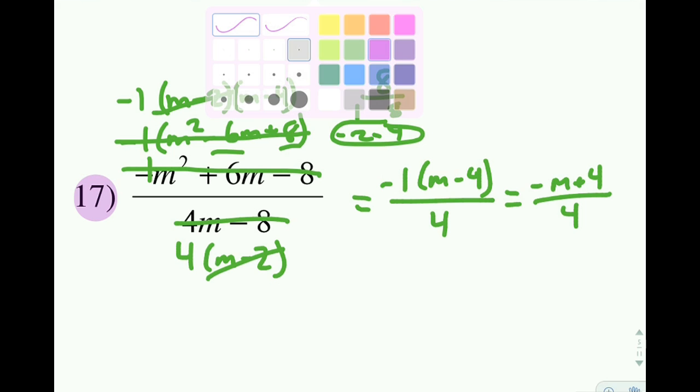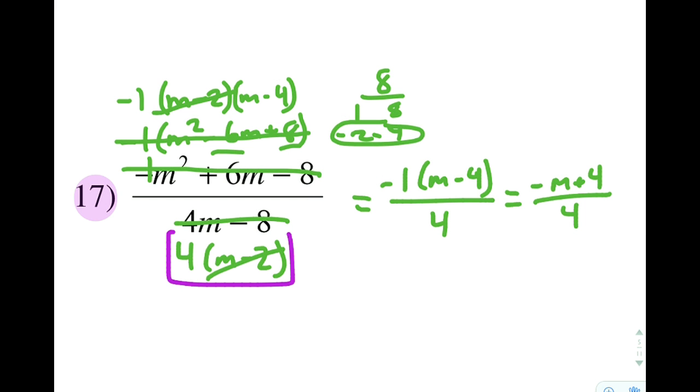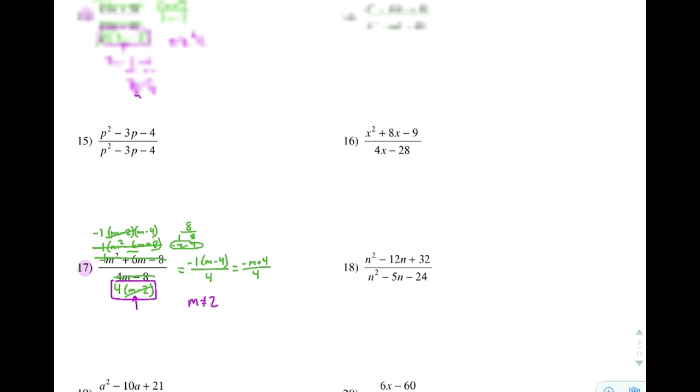Going back to our excluded values, we look at the original factored denominator. Even though in the final one there are no excluded values, in this original one here, we could plug in a 2 for m and cause that to go to 0. So our excluded value would be m not equal to 2. Good luck on this.